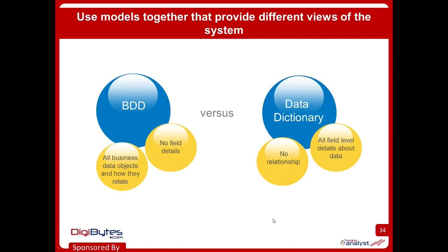Requirements models are exactly the same thing — it's why we have four different categories of models. You can't just look at the system from the data perspective; you also need to look at it from the systems perspective, the people perspective, and the objectives of the system. It's all about looking at the different perspectives that collectively together help us understand that we have a full set of requirements defined. A great example: the business data diagram shows all the different business data objects and their relationships, but it doesn't give us field-level information at all. Whereas the data dictionary gives us field-level detail but doesn't show the relationships between objects. These two models actually complement each other really well — for every object in the BDD, you should have fields defined in the data dictionary.